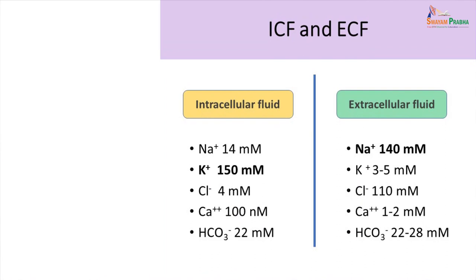When we look at the different body fluid compartments — the extracellular fluid and intracellular fluid — and look at the ionic compositions of these different solutions, we realize that concentration is expressed in millimoles. For example, potassium in the intracellular fluid is expressed as 150 millimoles per liter. So this gives us a way of identifying concentrations of different compounds or ions in solutions.